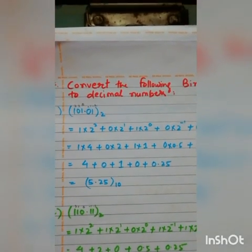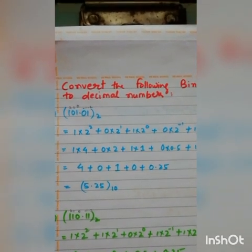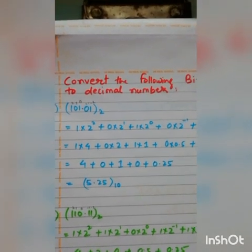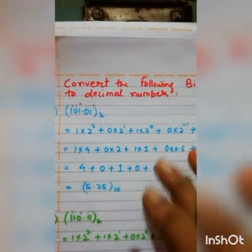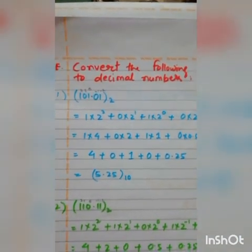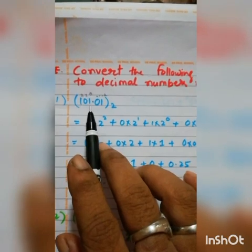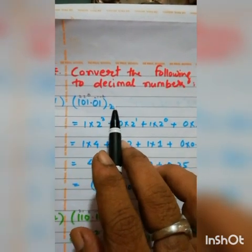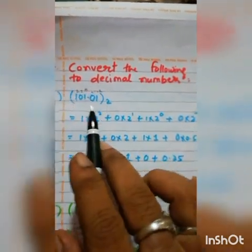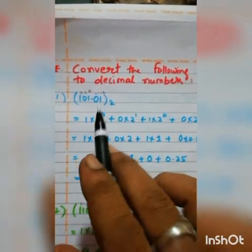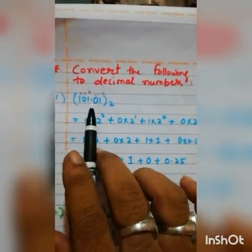This is exercise E: convert the following binary numbers to decimal numbers. I will teach you the first one, and after that you will follow the same procedure. The first question is 101.01 base 2 — this is a binary decimal number that you have to convert to decimal.